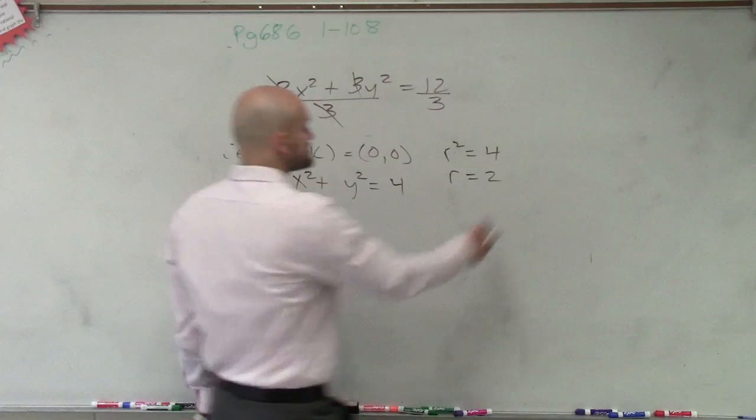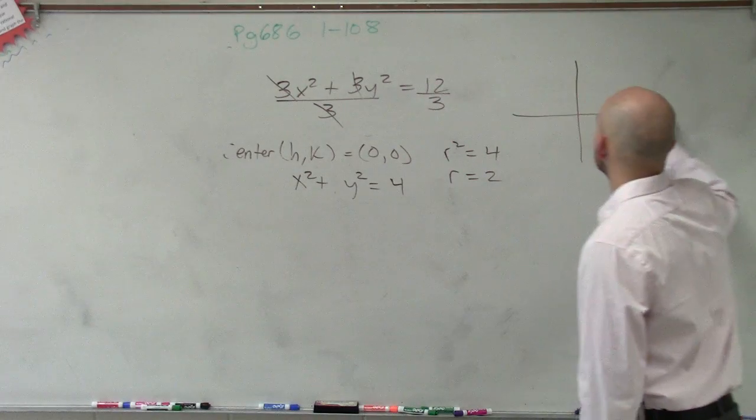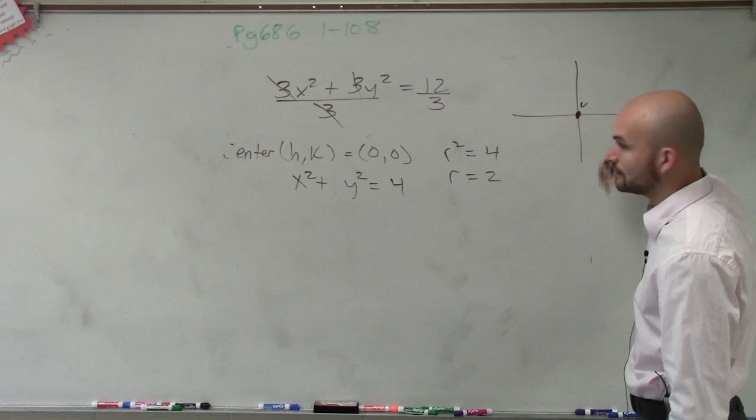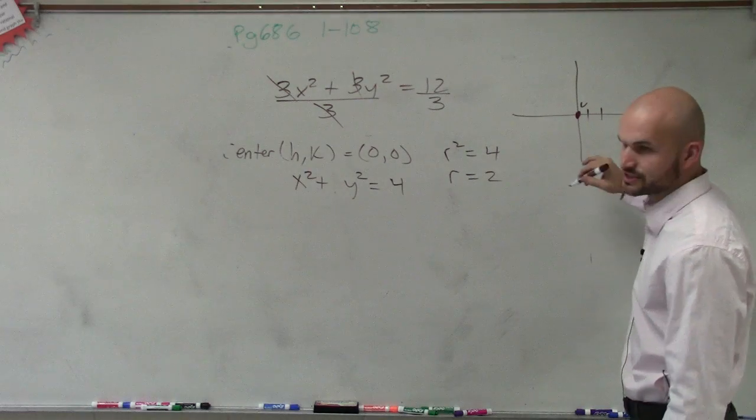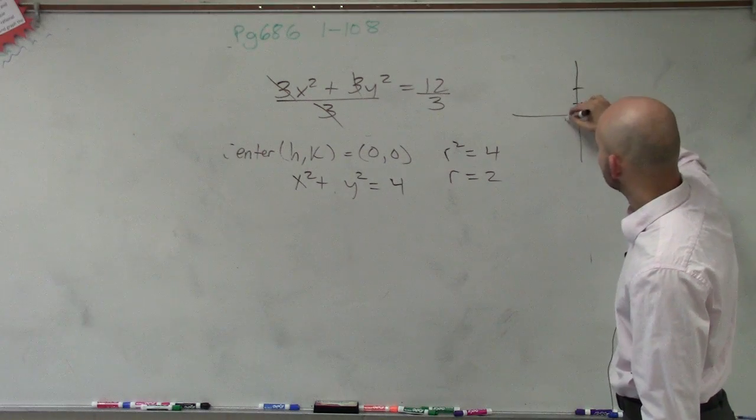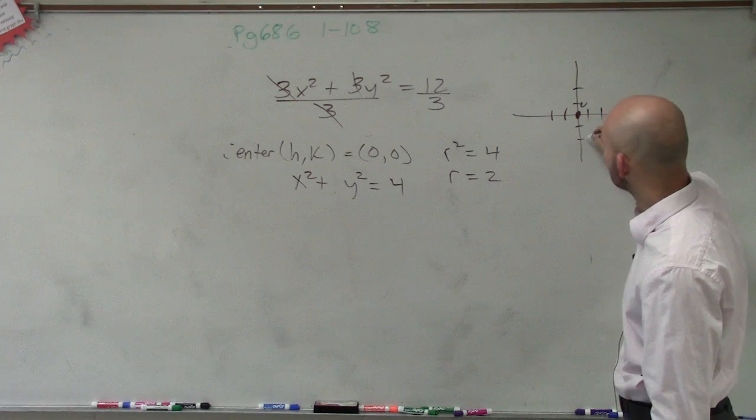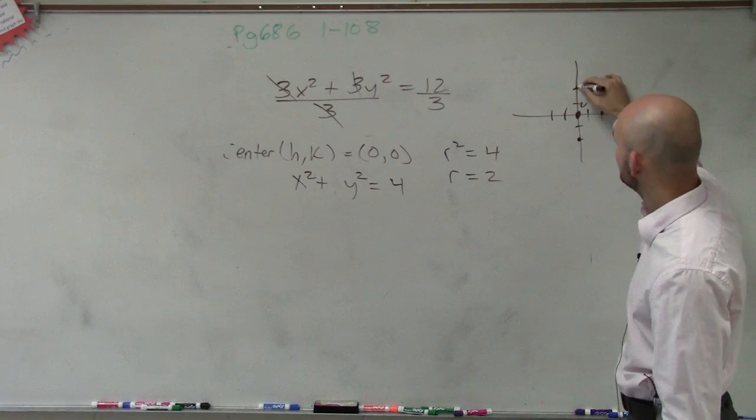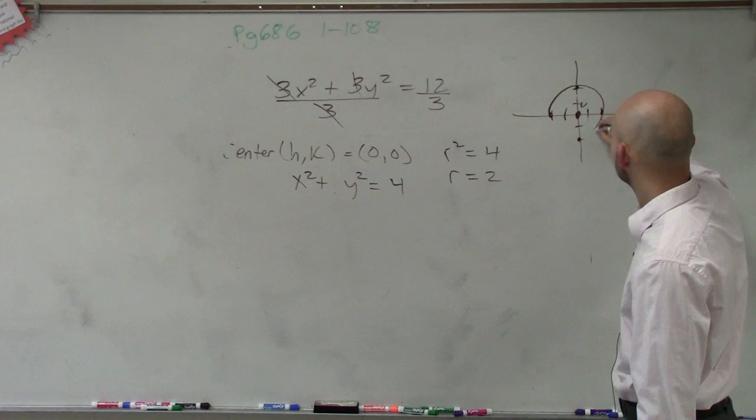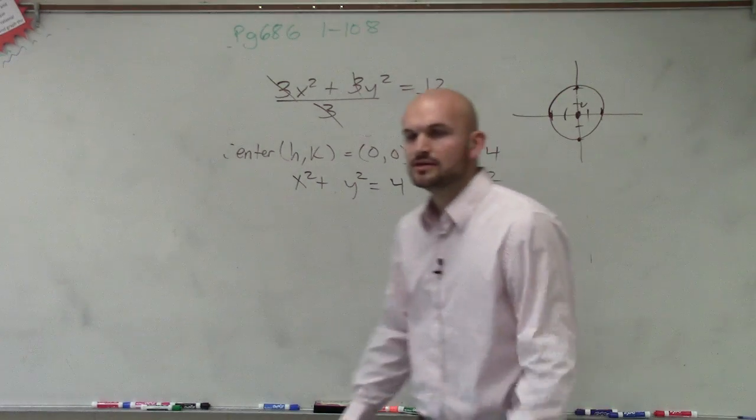So to graph this, we know that the center's at 0, 0, and our radius is 2. So we know that the distance from every point from our radius is going to be at 2. So it looks something like that.